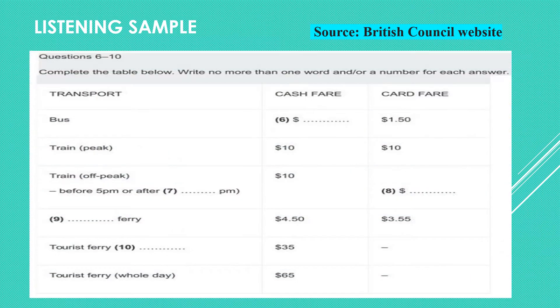Table completion in the IELTS listening test are often more difficult than they should be. Table completion questions are gap-fill questions that require you to fill in the missing words. The table will be made up of columns and rows containing information. Generally, tables categorize information — that is, they group pieces of information that are related in some way or share the same features. The subject matter could be almost anything, but as long as you have a good strategy to follow, you will be able to answer any question you are given.